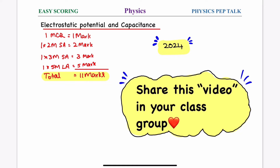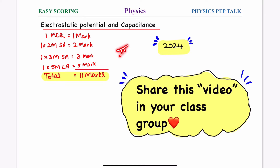We will talk about this year's model question paper. In the model question paper, Chapter 1 has two long answers. When we talk about numericals, we talk about the first chapter derivation. Five marks are the same as per the blueprint.